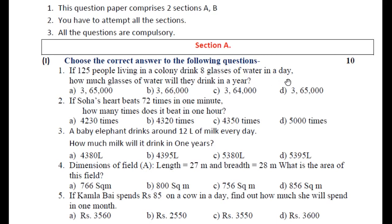If 125 people living in a colony drink 8 glasses of water in a day, how many glasses of water will they drink in a year? कालोनी में 125 people हैं और वे 8 glasses of water एक दिन में drink करते हैं. सबसे पहले one day में total glasses निकालने के लिए 125 में 8 का multiply करना होगा. फिर one year में 365 days होते हैं, तो 365 का multiply कर दीजिए.